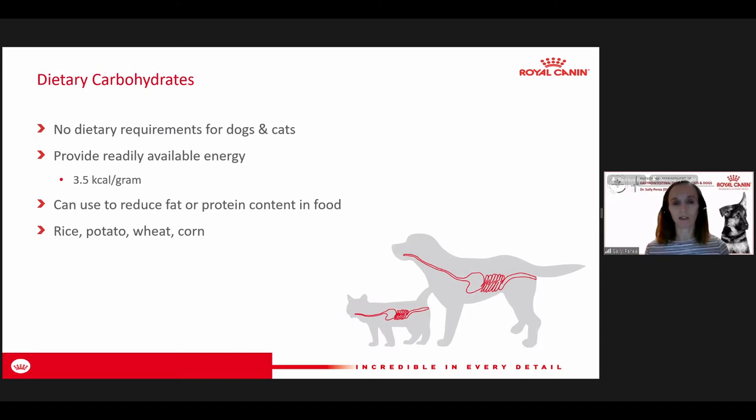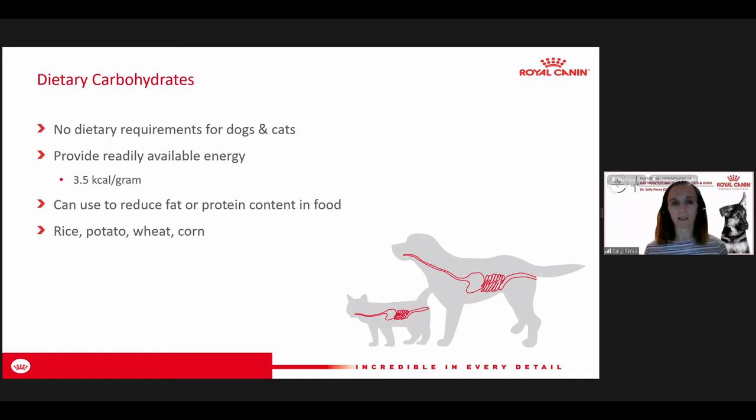For GI disease, we tend to select more highly digestible carbohydrate sources. Rice, potato, wheat, and corn are four that you'll commonly see. Also in the category of carbohydrates is dietary fiber, which is very important for gastrointestinal health even though there's no formal carbohydrate requirement.